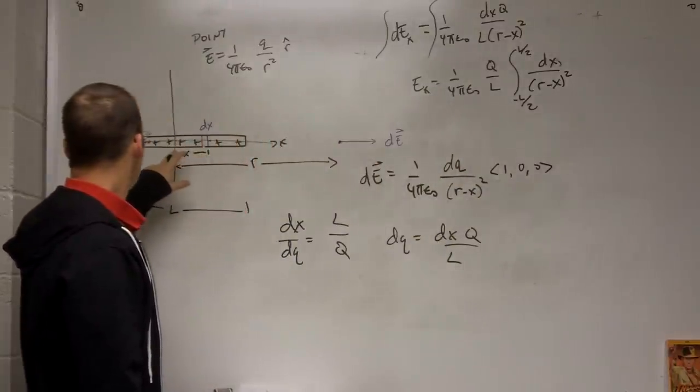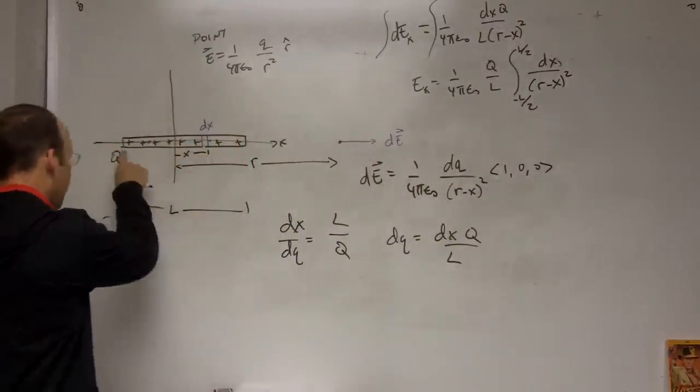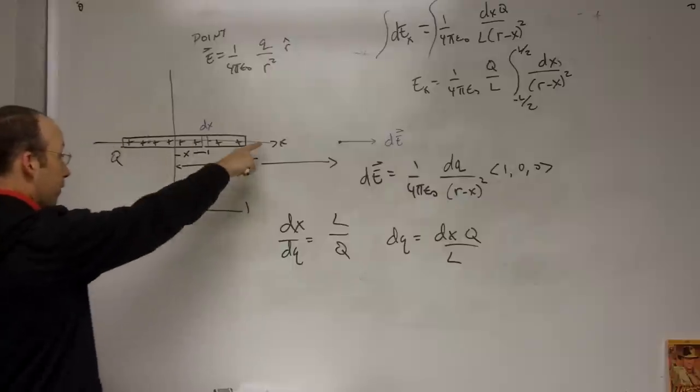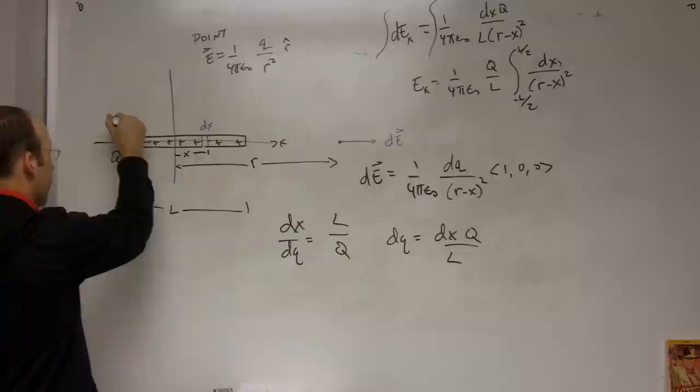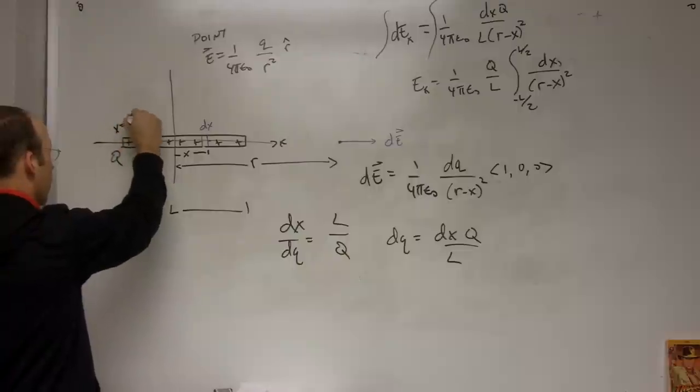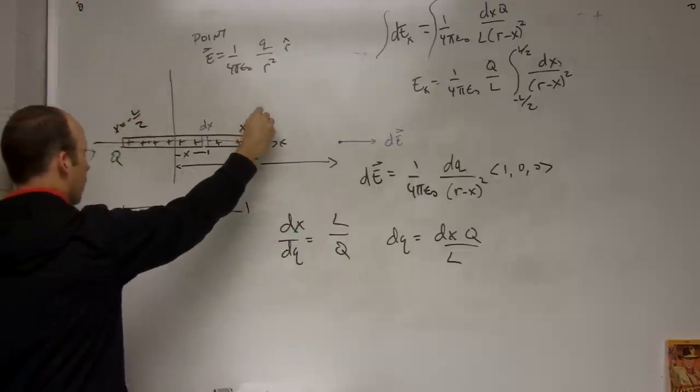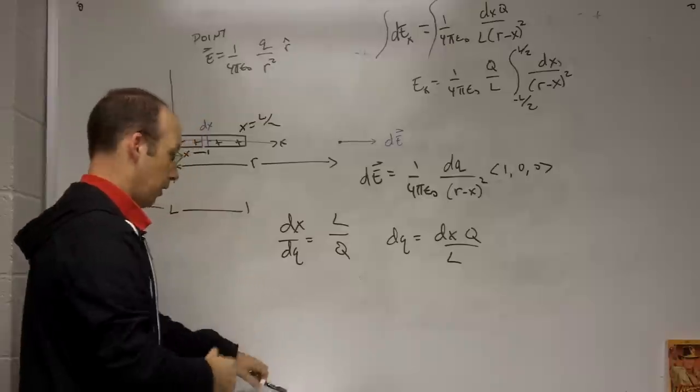And I get the X component of the electric field is 1 over 4 pi epsilon naught. I can bring out this Q over L. And then I have the integral from X equals negative L over 2 to L over 2 of DX over R minus X quantity squared. Okay, so you see here, I'm adding up from here to there. If the whole thing has a length L, then over here this is X equals negative L over 2, and this is X equals L over 2.